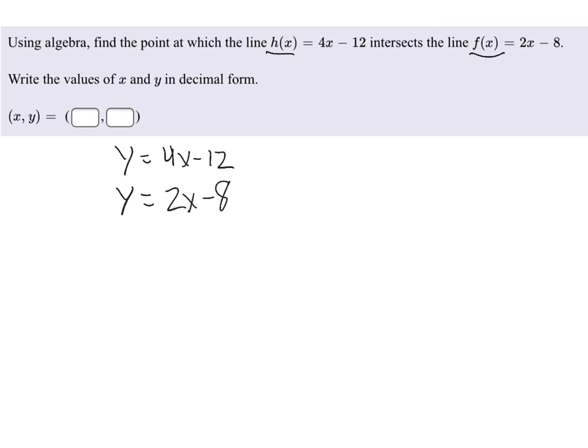Now we view this as a system of equations. We're set up really well here because we have the y's by themselves, which means we can use the substitution method very easily. Technically, what we're going to do is take the bottom expression for y here and substitute it into the equation right there. So if we do that, what we end up with is the equation 2x minus 8 equals 4x minus 12.